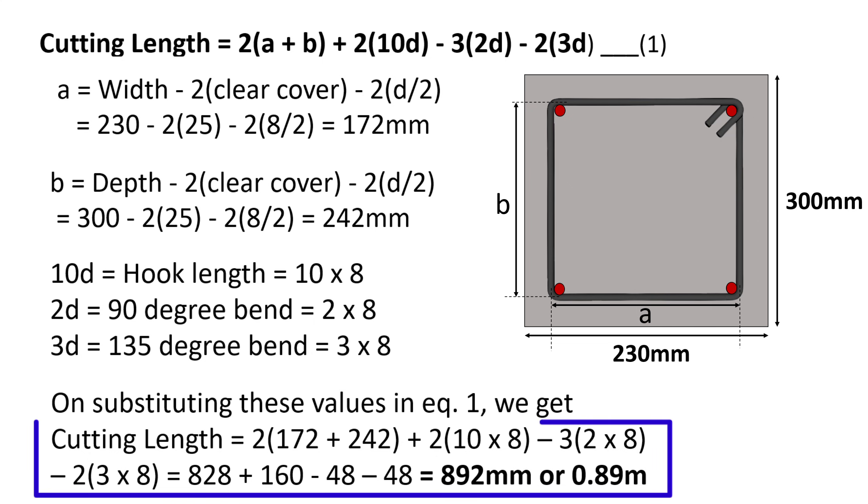On substituting these values in equation 1, we get the cutting length of stirrup equal to 892 mm, or 0.89 meters.